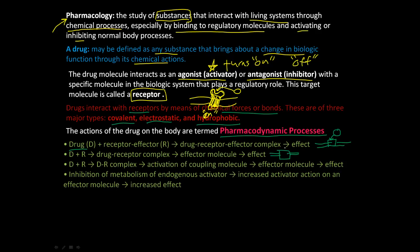Another mechanism: if you have a membrane and a drug binding to form a drug-receptor complex, that complex activates a coupling molecule, which then affects an effector molecule, and then you have an effect. You can also have inhibition of metabolism of an endogenous activator, which leads to increased activator action on an effector molecule and then an increased effect.